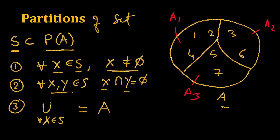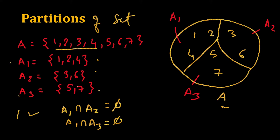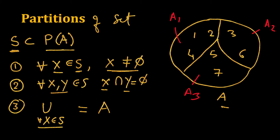Now the second property: they should be pairwise disjoint. A1 intersection A2 is null. A1 intersection A3 — comparing {1, 2, 4} and {5, 7} — there is no common element. Similarly, A2 intersection A3 — comparing {3, 6} and {5, 7} — there is no common element. So all pairs are disjoint, and the second property is satisfied.